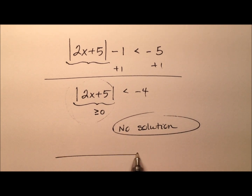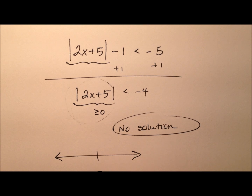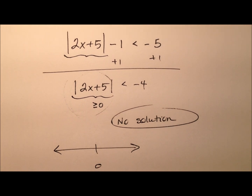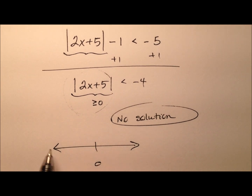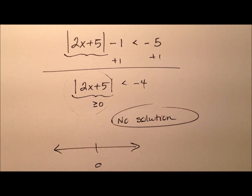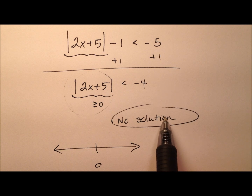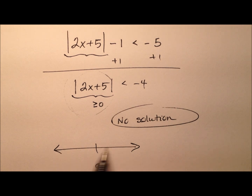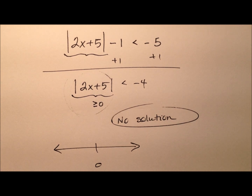Because what we have here is actually an impossible statement, how will I graph that? I do my number line, put 0 in the middle, and leave it blank because there are no values that are solutions to this inequality. When I say no solutions, I mean no real numbers, because this is our real number line.